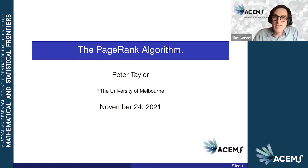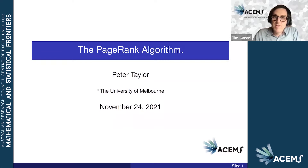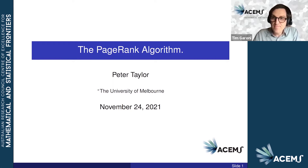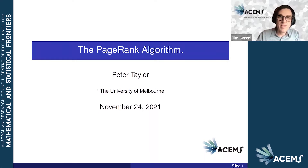From 2006 to 2008, Peter was chair of ANZIAM, and from 2010 to 2012 he was the president of the Australian Mathematical Society. In 2013, he was awarded a Laureate Fellowship by the Australian Research Council, and he's currently director of ACEMS. At the conclusion of Peter's presentation, we'll be taking questions — please use the Q&A button at the bottom of your screen to post questions. And without further ado, I'd like to invite Peter to speak about the PageRank algorithm.